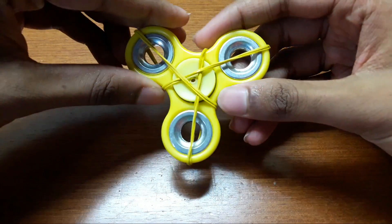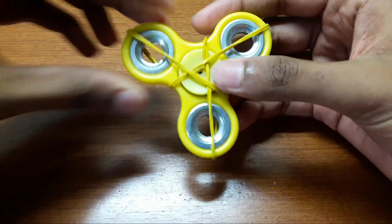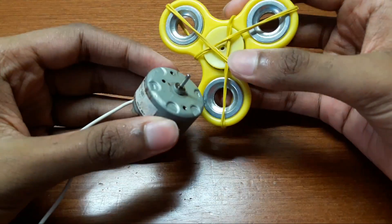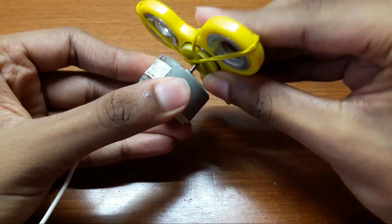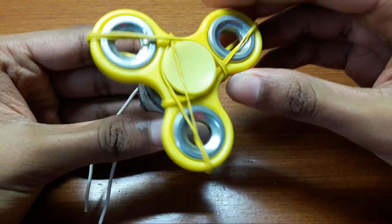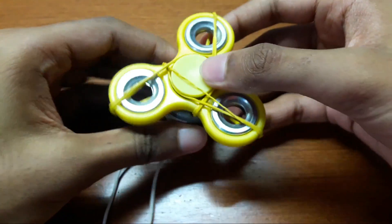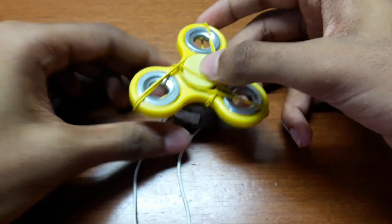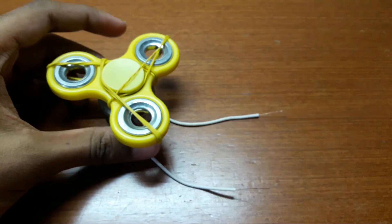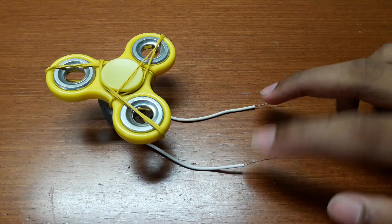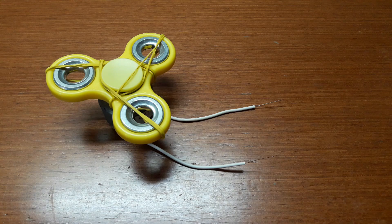Now once you have tied up this fidget spinner with rubber bands, place it on top of the DC motor and connect the two ends of the DC motor with the two ends of the LED.